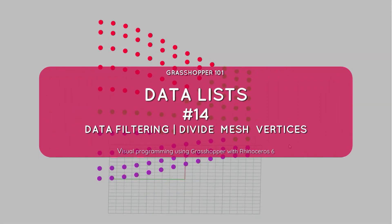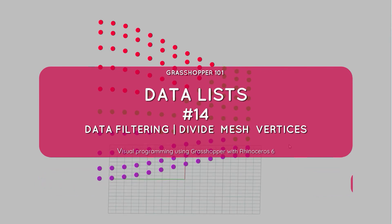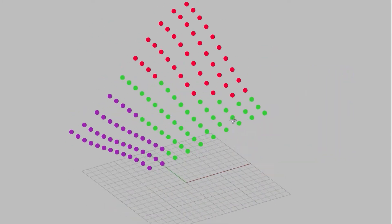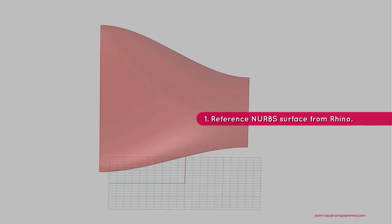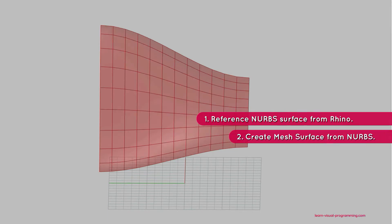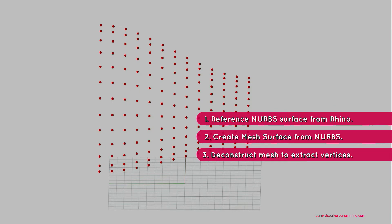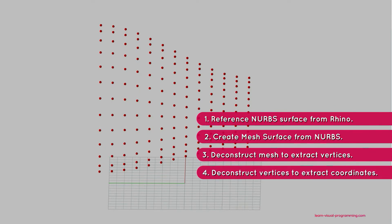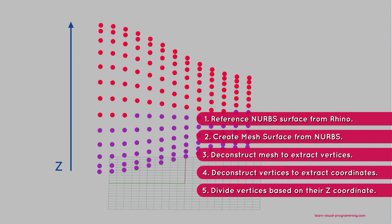In this tutorial we're going to practice using conditional and logical operators and we're going to divide a list of mesh vertices. We're going to begin by referencing a NURB surface from Rhino to Grasshopper, convert this NURB surface into a mesh surface, deconstruct the mesh to extract its vertices, deconstruct vertices to extract coordinates, and finally divide this list of vertices based on their Z coordinate.